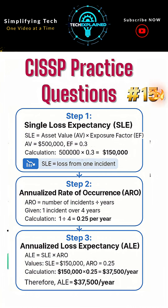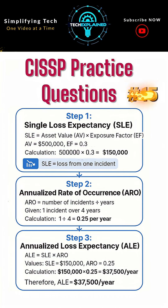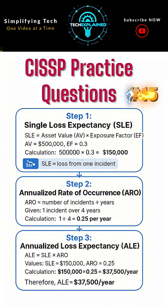SLE equals Asset Value (AV) times Exposure Factor (EF). SLE equals $500,000 times 0.3 equals $150,000.